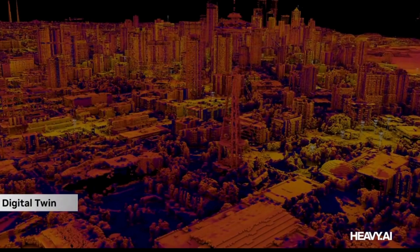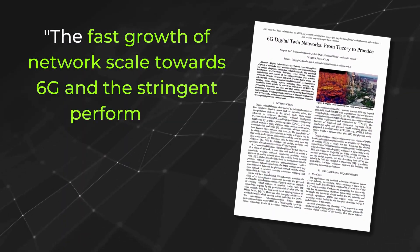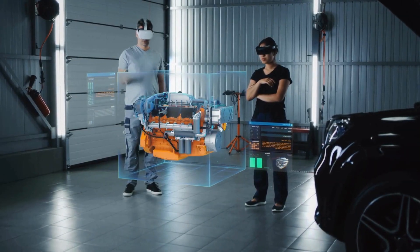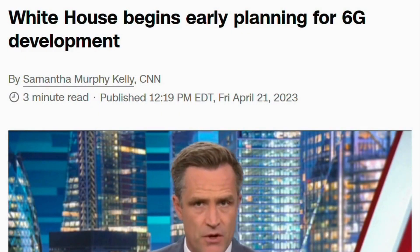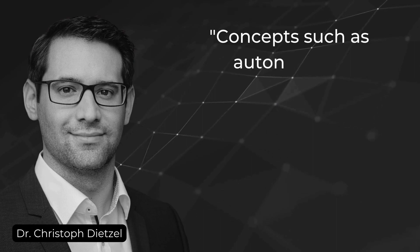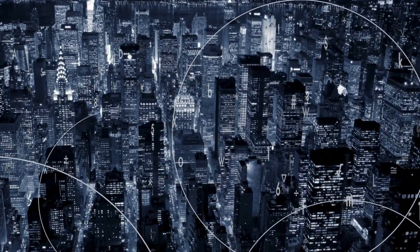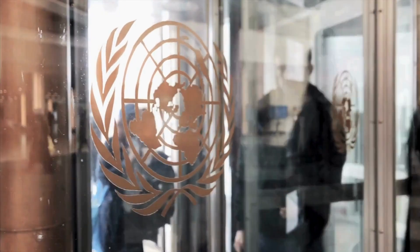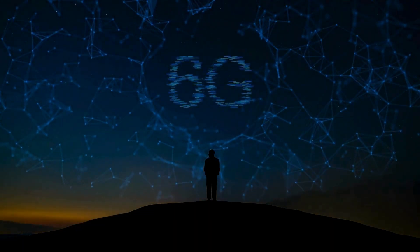A 2022 joint research report from NVIDIA and HEAVI proposed a framework for uniting digital twins with 6G networks. The authors conclude: 'The fast growth of network scale towards 6G and the stringent performance requirements of diverse use cases call for innovation tools and platforms.' Though speculation about 6G-fueled applications may seem premature, telecommunications providers, global organizations, and governments are already heavily investing in research. Dr. Christoph Dietzel, global head of products and research at DCIX, noted that concepts such as autonomous vehicles, smart cities, and Industry 4.0 used to be far-off thought experiments — but thanks to 5G's evolution paired with advances in AI, machine learning, and cloud computing, they are rapidly becoming mainstream. The International Telecommunication Union plans to finish the initial 6G standardization process no later than 2030.